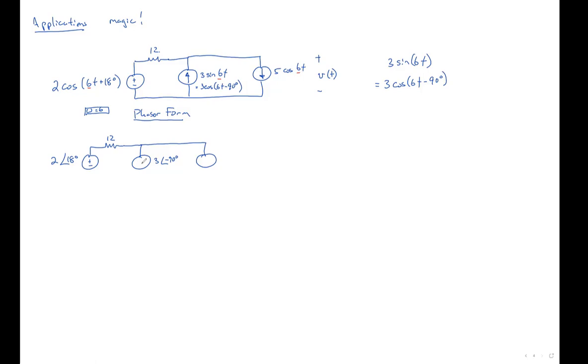Similarly, whoops, unfortunately I drew the arrow in the wrong direction. There we go. Now this guy is just going to be, it's already in cosine form. So that's easy. It's angle is zero degrees.